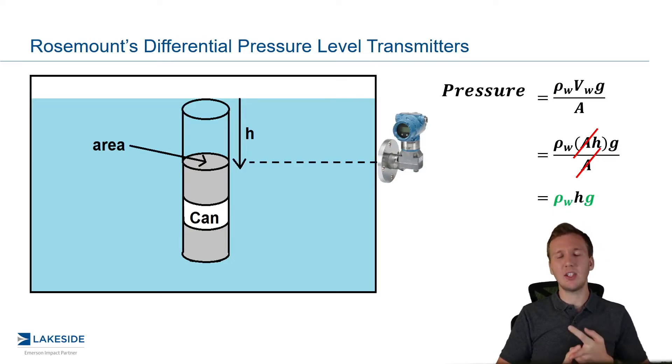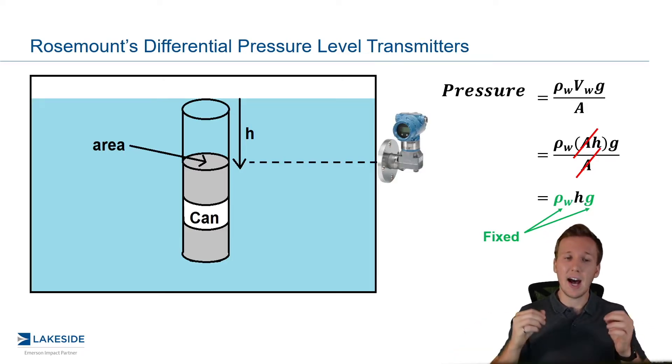Now, why do I have density and gravitational constant in green? It's because both of these are fixed. Now fixed, but not necessarily constant. Gravitational constant is relatively constant, as the name would imply. The density is not. The density, we have to fix it in order to configure a DP level transmitter.